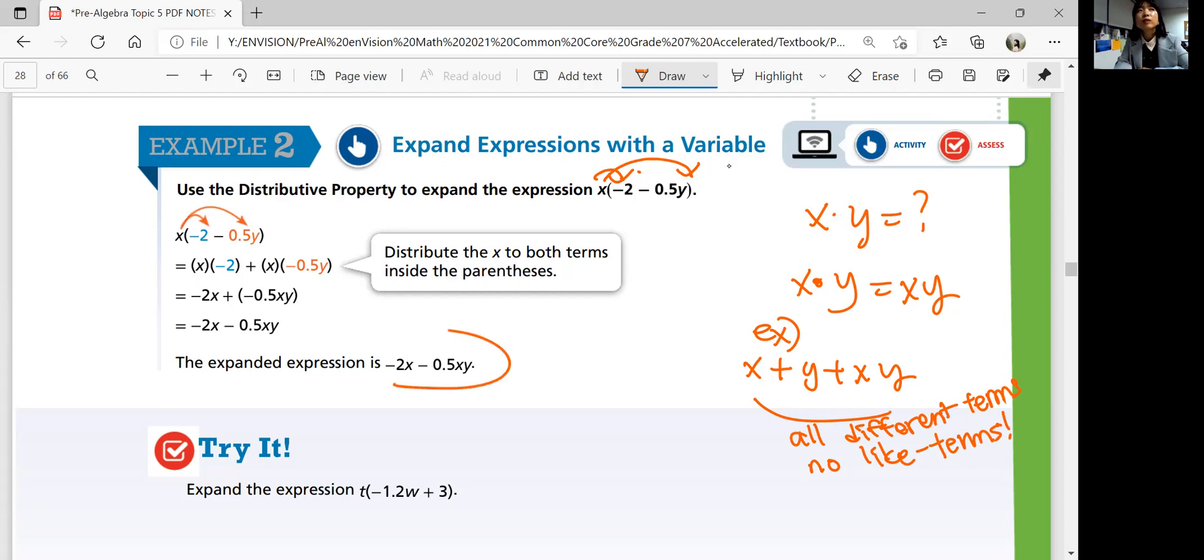All right. So the expanded expression is this. So try expanding this expression yourself. t times negative 1 over 2w plus 3. Come back when you're ready for answer.